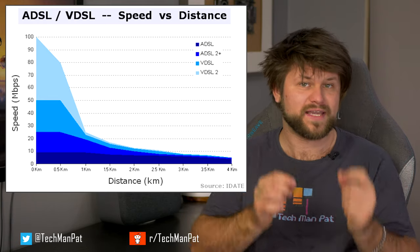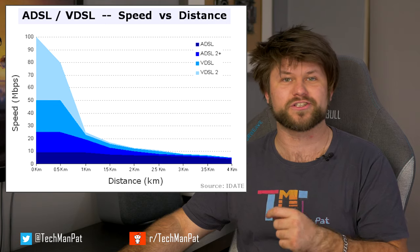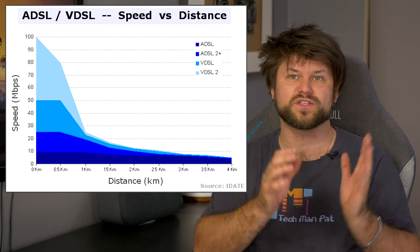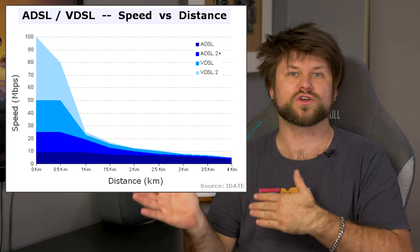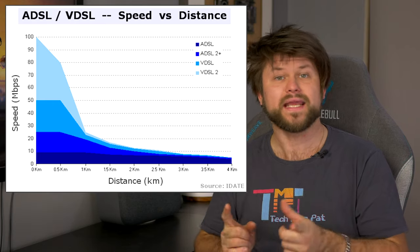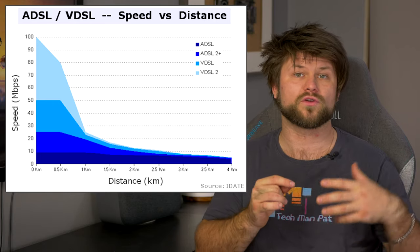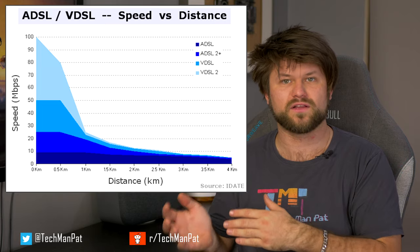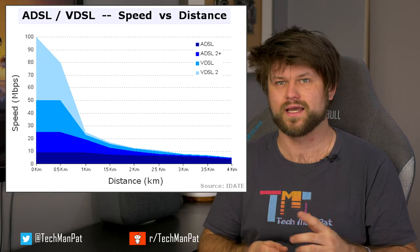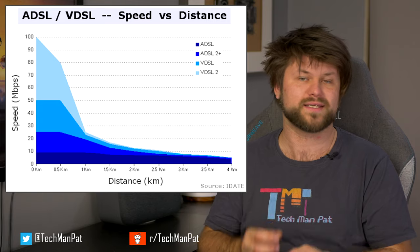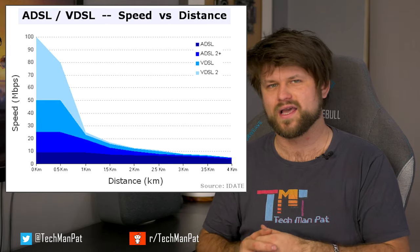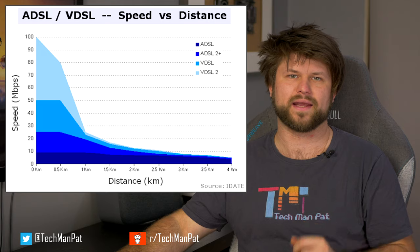These rates mean that VDSL is capable of supporting applications such as high definition television, telephone services, voice over IP, and general internet access over a single connection. VDSL is deployed over existing wiring used for analog telephone services and lower speed DSL connections. This standard was approved by the International Telecommunication Union in November 2001, and Australia got it a few years later.